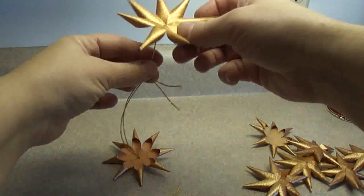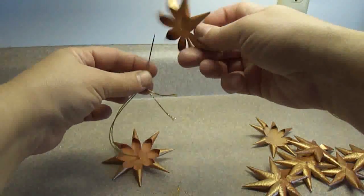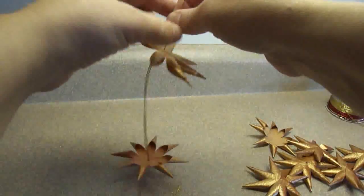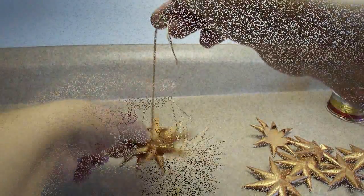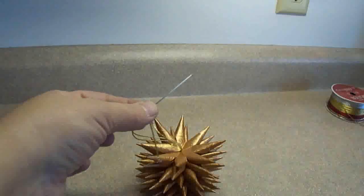And for the rest of them, you're going to put the nice side of the star, the shiny side up, and just do one at a time and just keep pushing them down like so until they're all on there.